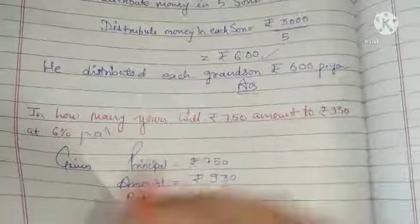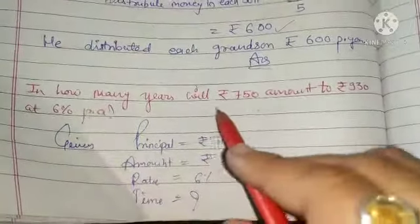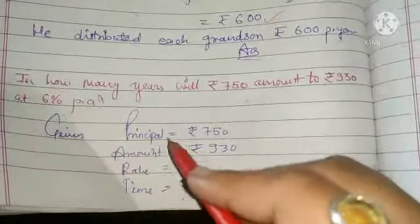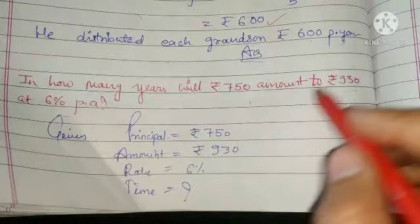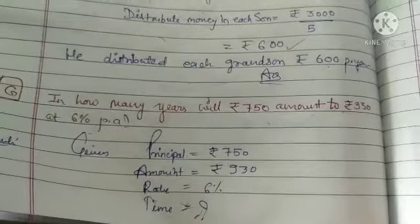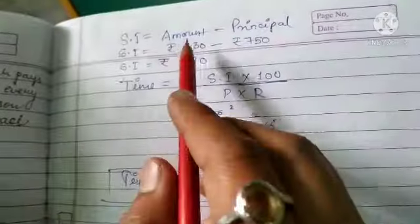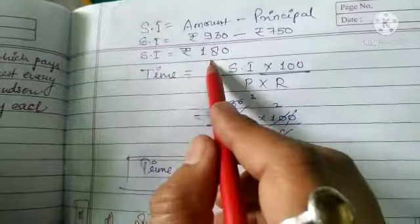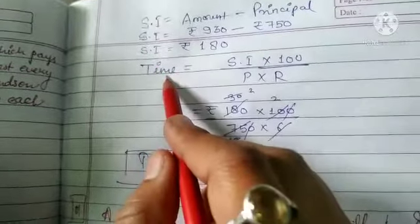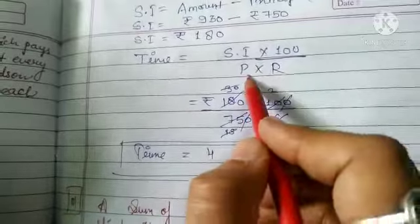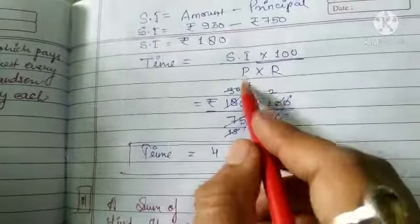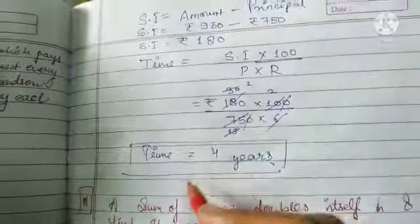Next question: How many years will Rs. 750 amount to Rs. 930 at 6% per annum? Given: Principal = Rs. 750, Amount = Rs. 930, Rate = 6%. First find SI = Amount − Principal = 930 − 750 = Rs. 180. Then use the formula: Time = SI × 100 / (P × R) = 180 × 100 / (750 × 6). Solving gives Time = 4 years.